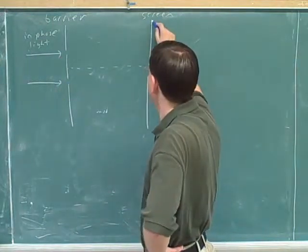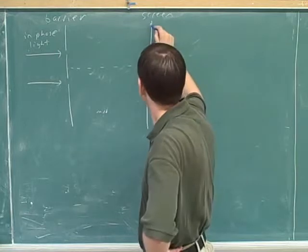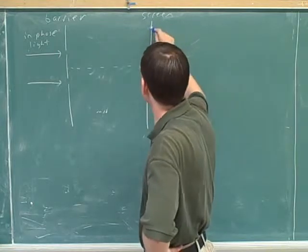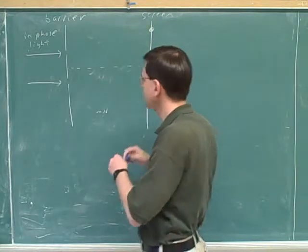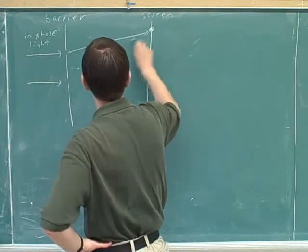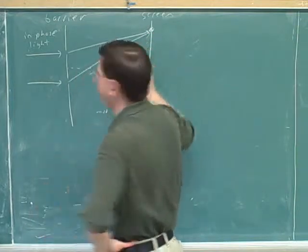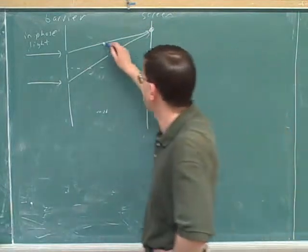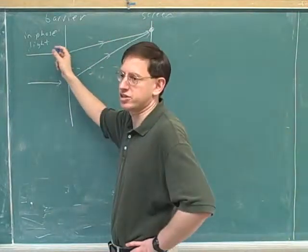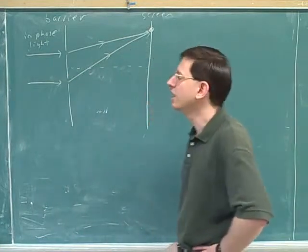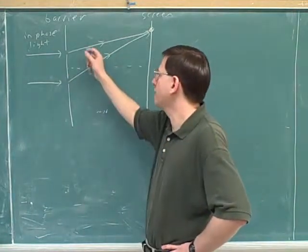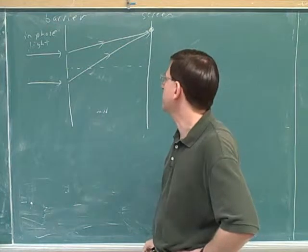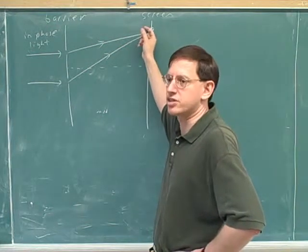And then if we look at any particular spot on the screen, so I can pick any spot here, but let's say I pick this spot at random. That's going to get hit by light from the first slit and from the second slit. Remember, I could pick any spot. Any spot will get hit by light from the two slits. But because these two rays are going different distances, they may interfere constructively or destructively.